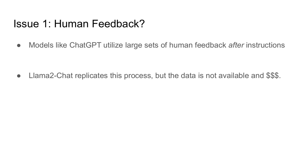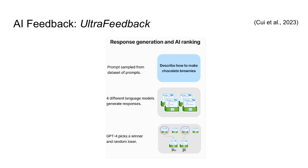The literature on large language models argues that it's necessary to collect human feedback in order to improve this problem, which is known as language model alignment. Models like ChatGPT utilize a large set of human feedback, which is collected after the model is instruction-tuned. Open-source models like LlamaChat attempt to replicate this process, but the data they use and the human feedback itself is not made available with the model. If we are going to align open-source models in a generic way, we're going to need a different strategy.